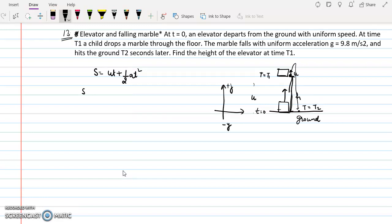So s will be -h. What will be u? u will be the initial velocity, the uniform velocity of the elevator. As the elevator is going with uniform velocity, the velocity of the elevator must be h/t1.